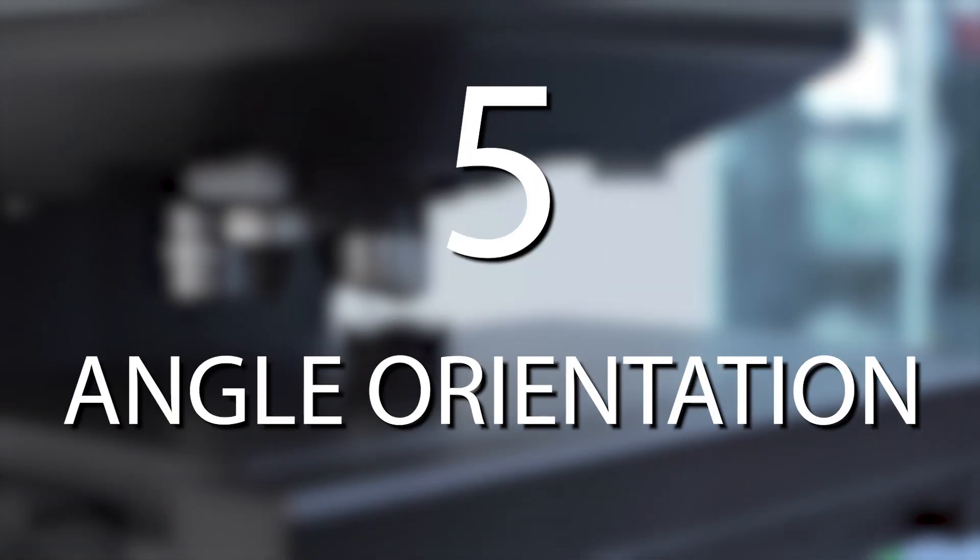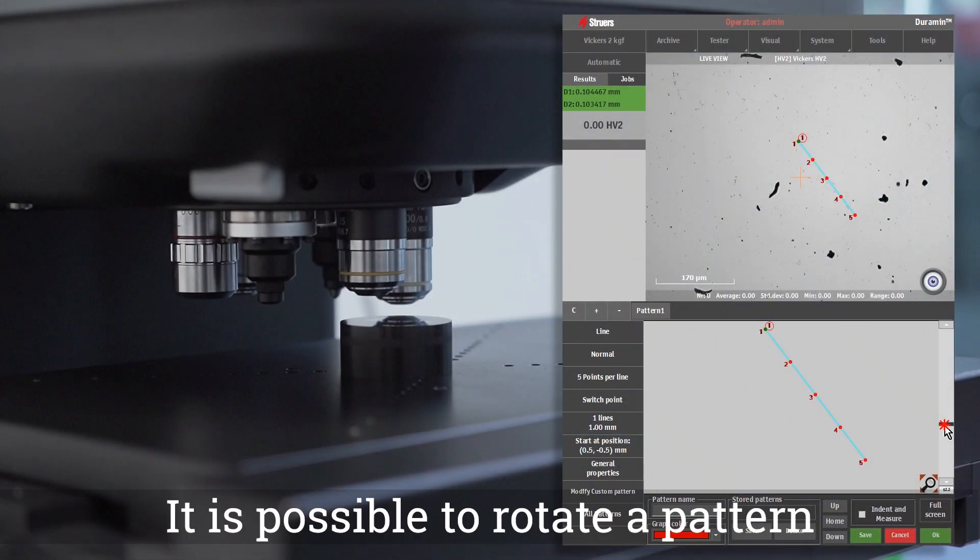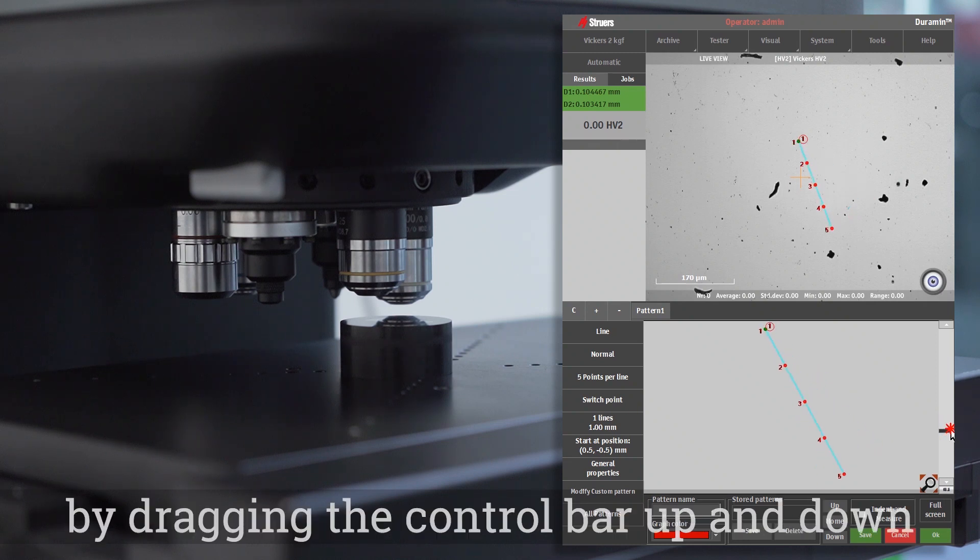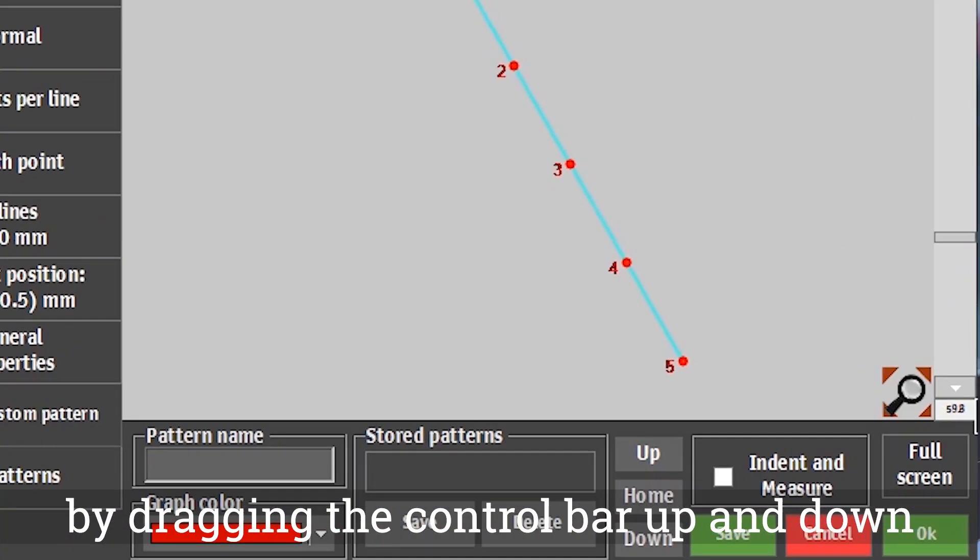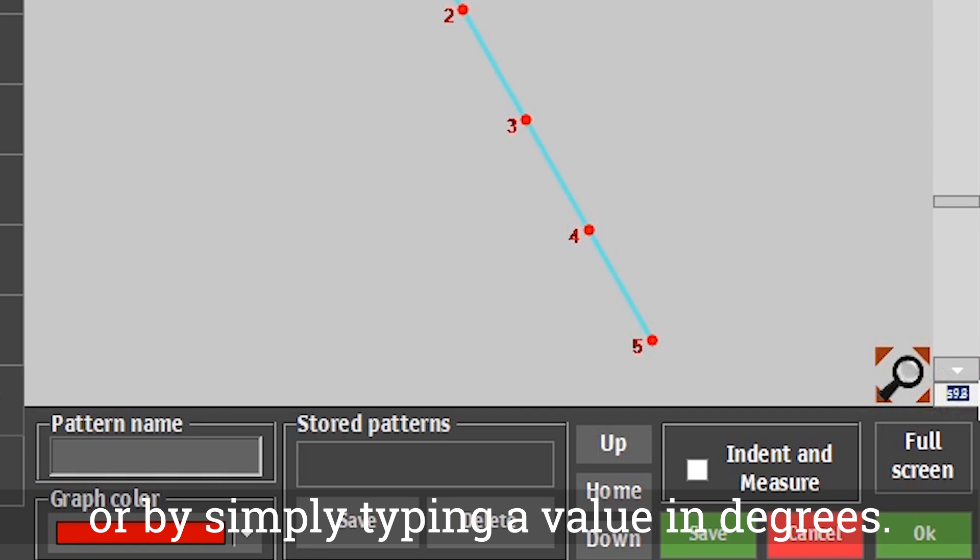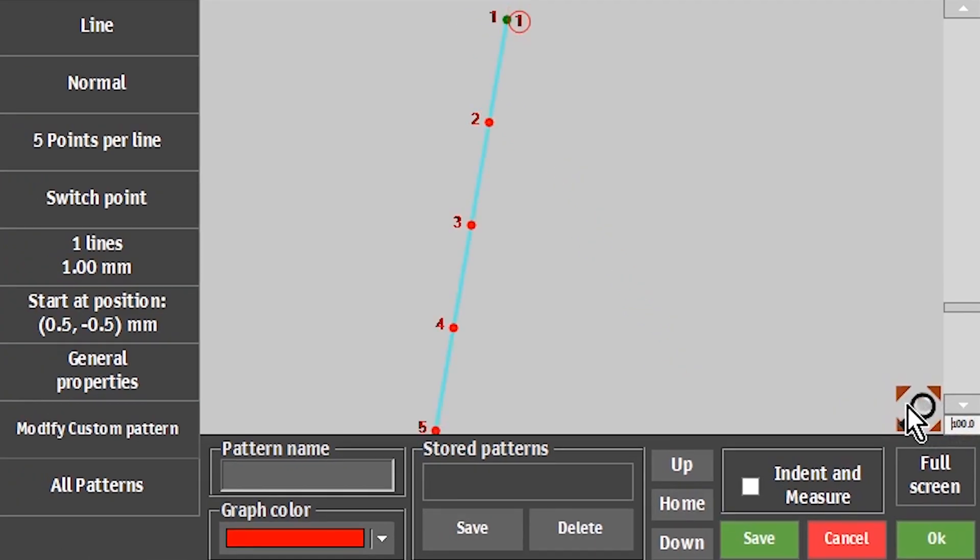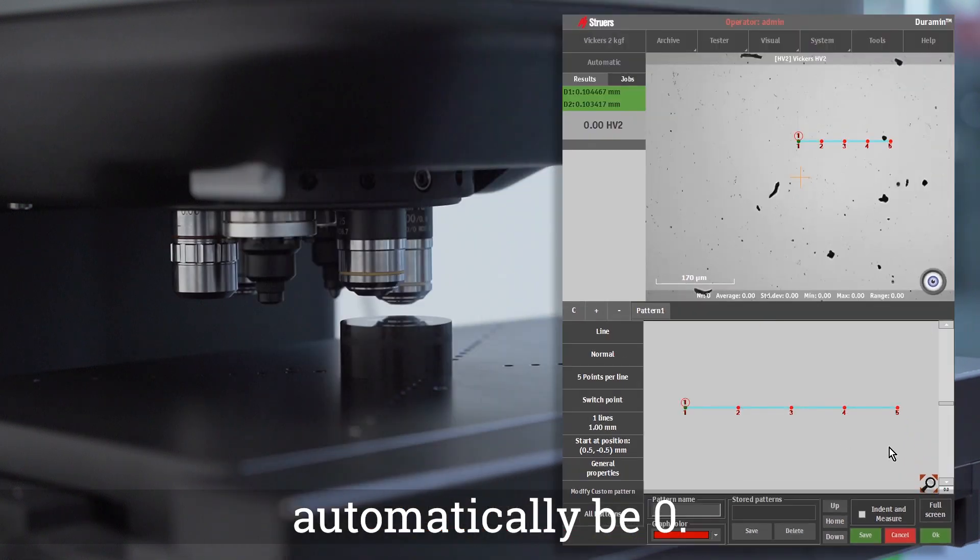Angle orientation. It is possible to rotate a pattern by dragging the control bar up and down or by simply typing a value in degrees. By double-clicking, the value will automatically be zero.